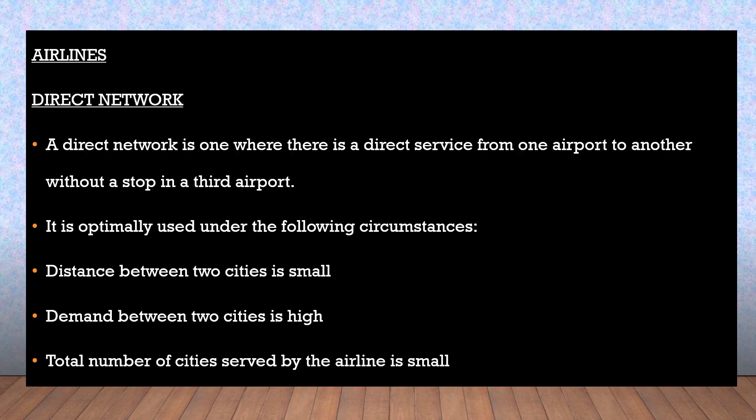Airlines Direct Network: A direct network is one where there is a direct service from one airport to another without a stop at a third airport. It is typically used under the following circumstances: the distance between two cities is small, demand between two cities is high, or the total number of cities served by the airline is small.